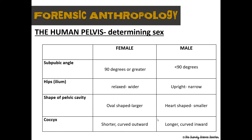As far as the pelvic cavity: for a female it's going to be more oval-shaped and larger, compared to the male, whose pelvic cavity is going to be smaller and typically heart-shaped. Then the coccyx is going to be shorter for a female and longer for a male. It curves outward in the female and curves inward in the male.